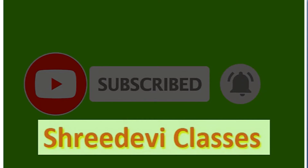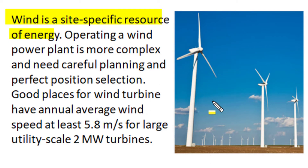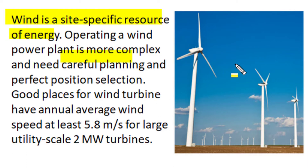Let's understand some practical concepts of wind turbine generation. Wind is a site-specific resource of energy — one cannot commission and operate wind turbine plants at any arbitrary position. Installation and commissioning of a wind power plant involve a huge amount of investment, and operation is very complex, requiring careful planning and perfect position selection. A good place for wind turbine operation should have an annual average wind speed of at least 5.8 meters per second.